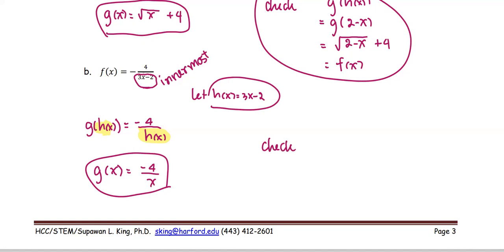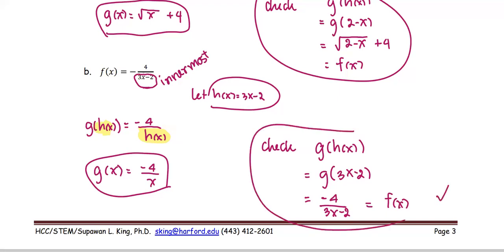Again, let's check. For g composed with h, g of h(x) is the quantity 3x minus 2. Where g of the input is negative 4 over the input, which is 3x minus 2. That turns out to be the same as the original function f(x) given. The answer is h(x) equals 3x minus 2 and g(x) is negative 4 over x.